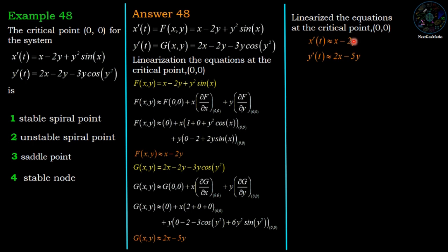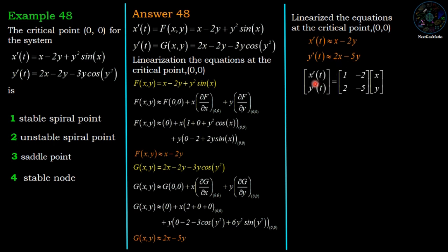The linearized coupled differential equation is: x' = x - 2y and y' = 2x - 5y. Rewriting in matrix form: [x', y']ᵀ = [[1, -2], [2, -5]] · [x, y]ᵀ. In other words, x' = Ax, where A is the 2×2 matrix [[1, -2], [2, -5]].